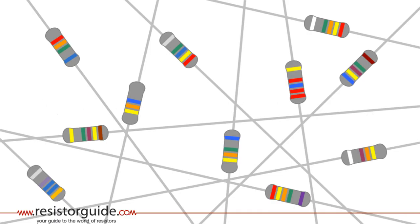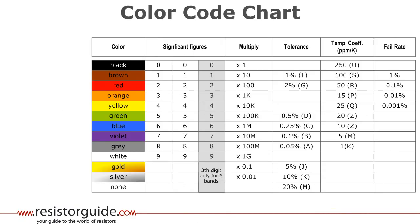Now how to read the color band? The color bands represent different values. This table which is also available on resistorguide.com is very useful to decipher those values.